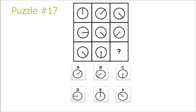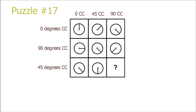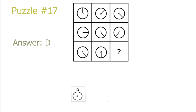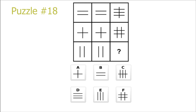Puzzle 17. This puzzle is easiest solved by just looking at the rows. First we have a 45 degree rotation clockwise, and then a 90 degree rotation clockwise. So we base ourselves on picture 8, rotate it 90 degrees clockwise, and we get picture D.